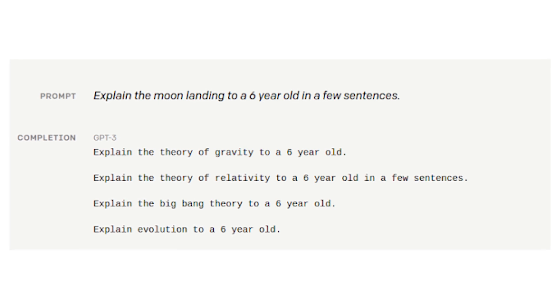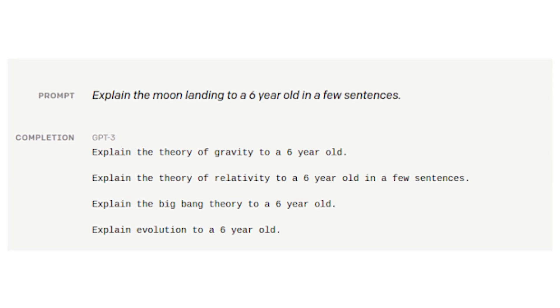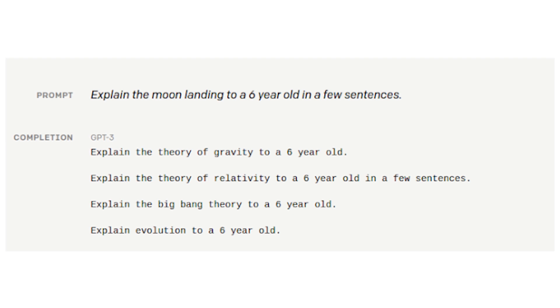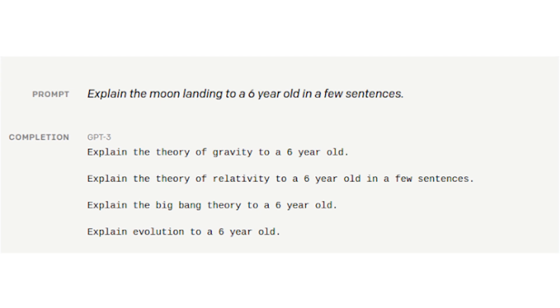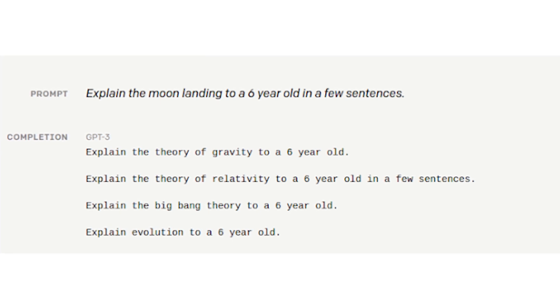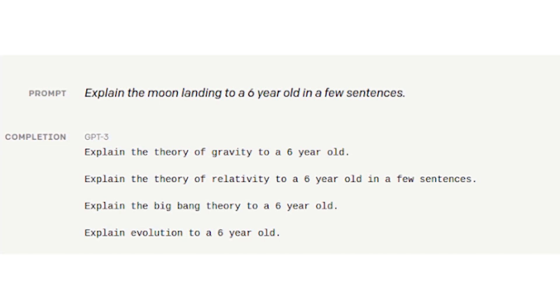For example, given a prompt like 'explain the moon landing to a six-year-old in a few sentences,' GPT-3 generated an unwanted response. The main reason is that it is trained to predict the next word in the sentence, not to generate human-preferred responses. Another problem is that it can generate unsafe and harmful comments, as it has no control over the text.